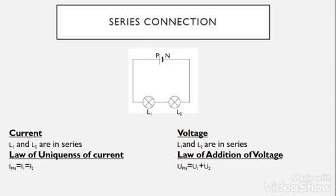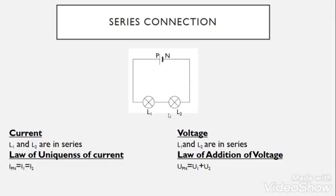First: current. Current in series connection is the same. We say that because L1 and L2 are in series, we apply the law of uniqueness of current, which means that the current is the same passing through L1 and L2. So IPN, the current across the battery, is the same for lamp I1 and lamp I2, as you can see the current passes through L1 and the same passes through L2.